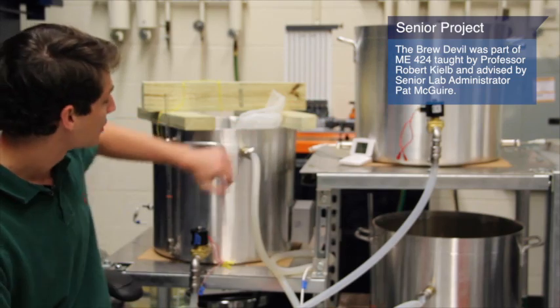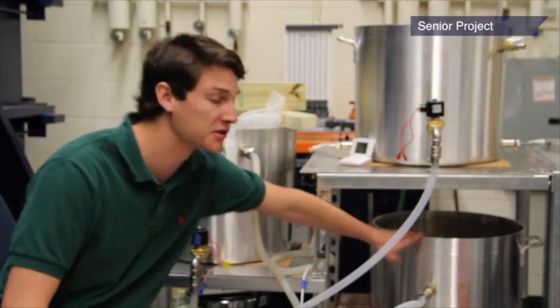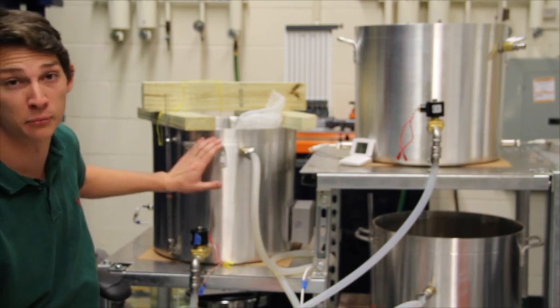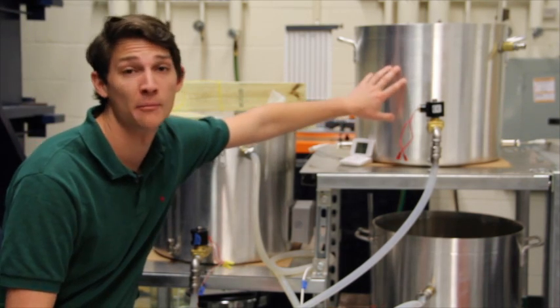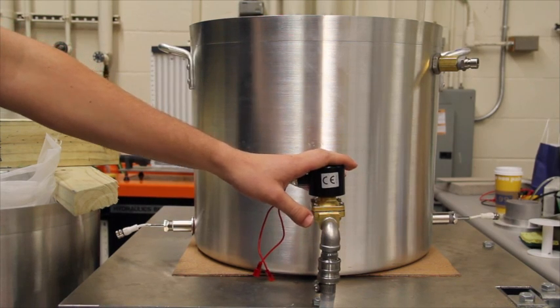That means we got three kettles here. Down here we have what's referred to as our hot liquor tank, over here we have our brew kettle, and up top we have our mash tun.